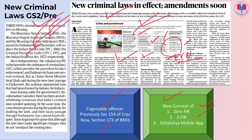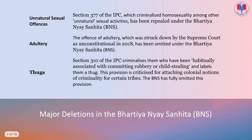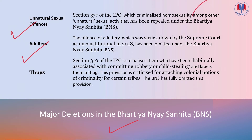The government has introduced provisions to use technology to help police record scenes of crime. Major decisions include: Section 164 of the IPC criminalizing homosexuality has been repealed. The offence of adultery, struck down by the Supreme Court as unconstitutional, has been omitted. Section 310 of the IPC criminalizing 'thugs' — those habitually associated with robbery or child stealing — has also been omitted.